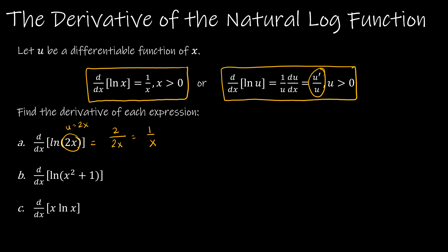For the second example, I'm taking the natural log of x squared plus 1. Again, applying the chain rule with u prime: u is x squared plus 1, so the derivative of u is 2x. That gives me 2x over x squared plus 1.